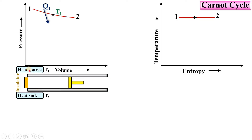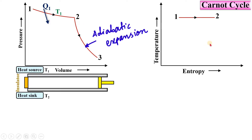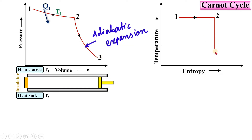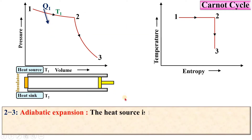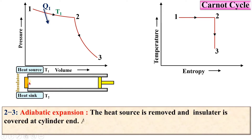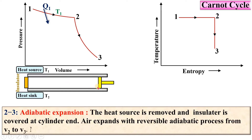Process 2 to 3 — adiabatic expansion: the insulator is covered again so there is no heat transfer. Due to the inertia of the piston, it continues to move and the working substance expands further from V2 to V3 in a reversible adiabatic process. On the TS diagram this is a vertical line, since the adiabatic process is isentropic — entropy is constant — and no heat is transferred.